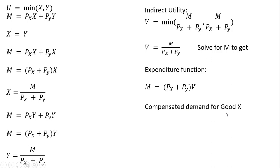We're going to get the compensated demand for good X by taking the partial derivative of the expenditure function with respect to the price of good X. And here we just get back a constant, V. So the compensated demand for good X is just a vertical curve.